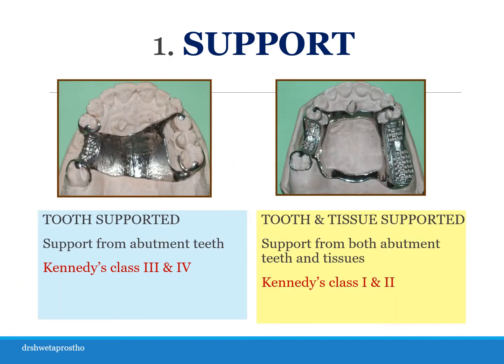The first point is support. The whole design of a cast partial denture depends on the support. We have two options for support in any prosthesis: first is the tissue, and second is the tooth or the abutment. If we talk about a complete denture, it is a totally tissue supported prosthesis. A fixed partial denture is a totally tooth supported prosthesis.